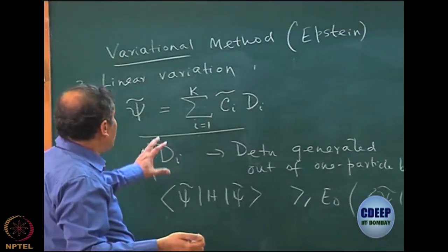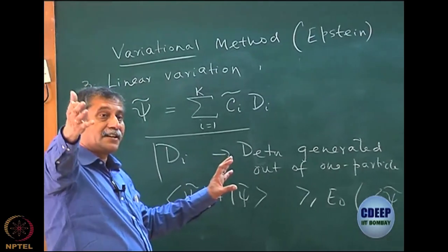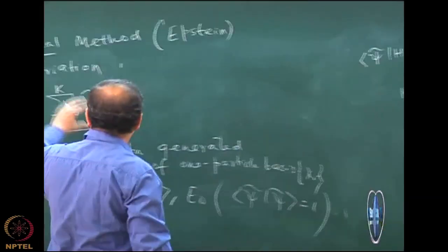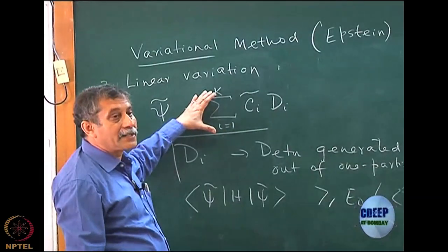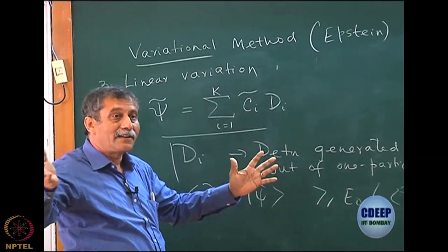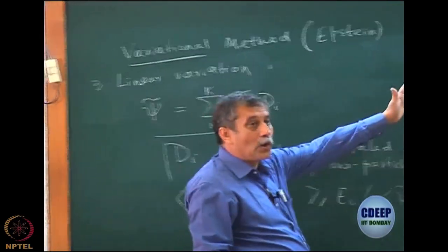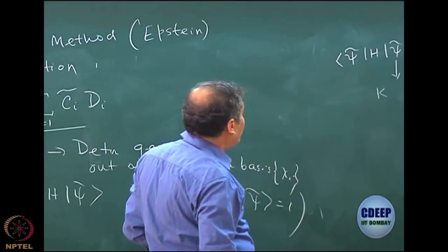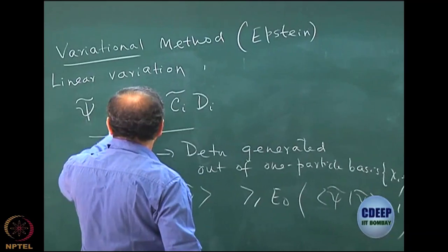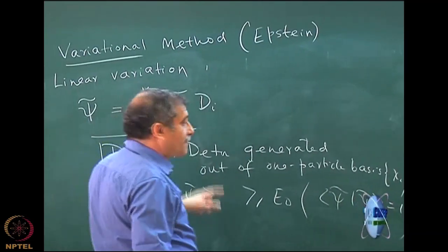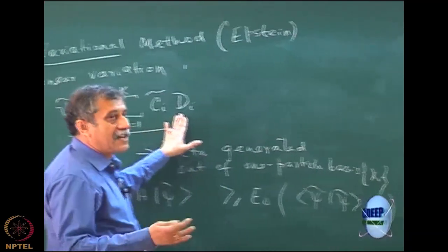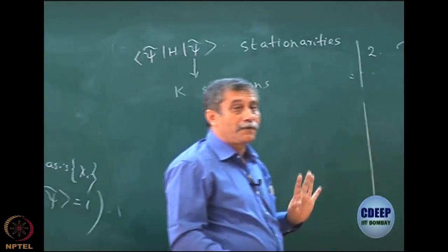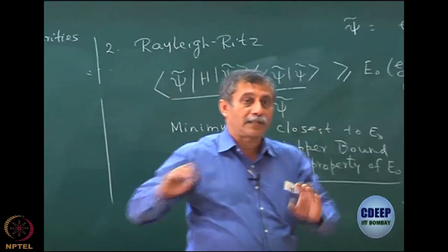Right away you can see that the configuration interaction that I discussed can be easily done using this for an incomplete set of determinants — that is, if I do not take all MCN but take a few of them, then exactly this is going to hold good for configuration interaction because it is an incomplete set. So if I have k number of determinants or k number of basis functions, this will give me k solutions.